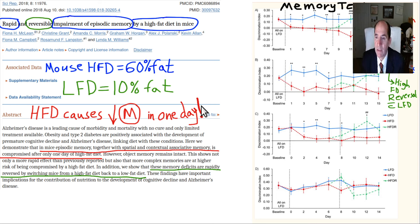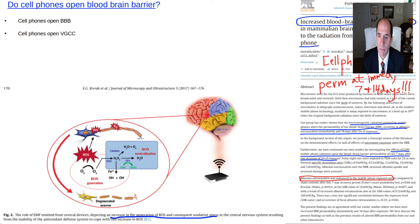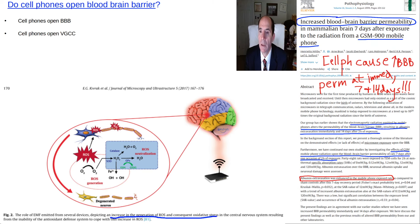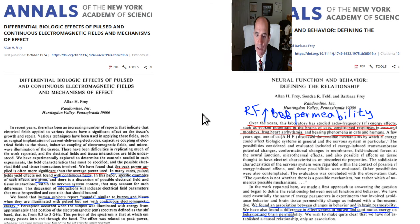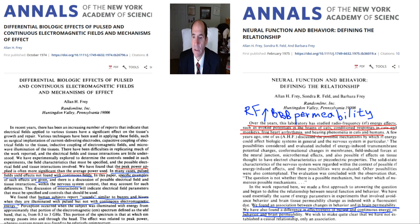That's why paleo-keto carnivore advocates claiming there's something good about their diet are mistaken — they're slowing down their brains and becoming less cognitively sharp. EMF can also open up the blood-brain barrier, open voltage-gated calcium channels, and decrease cognitive function. Avoid it to the extent you can.